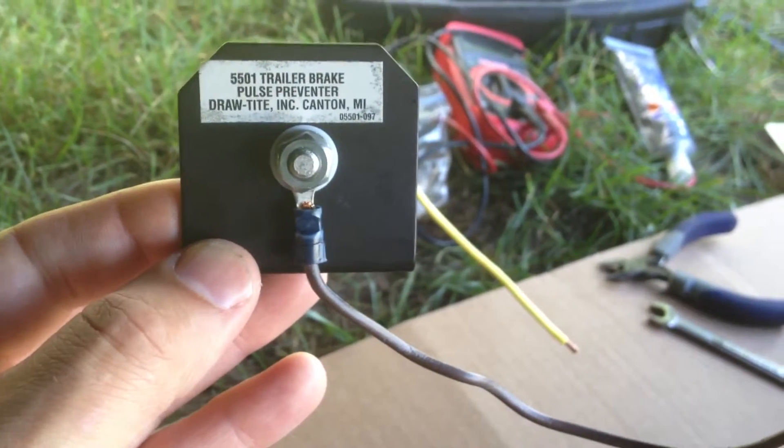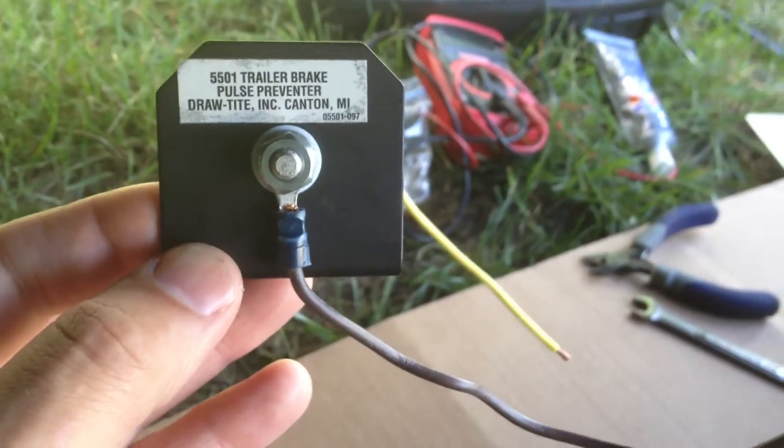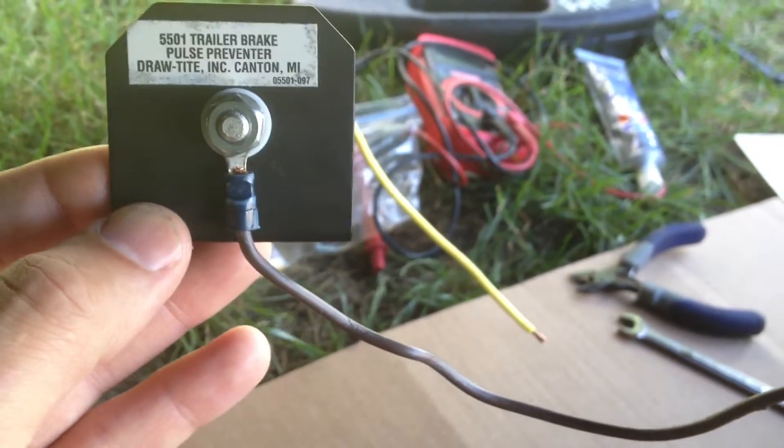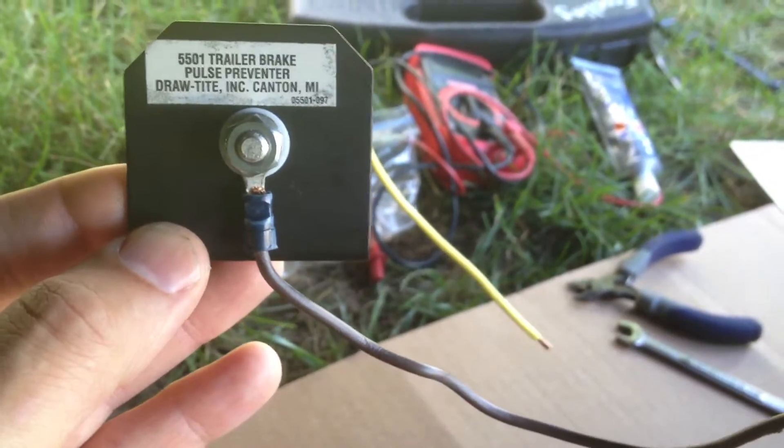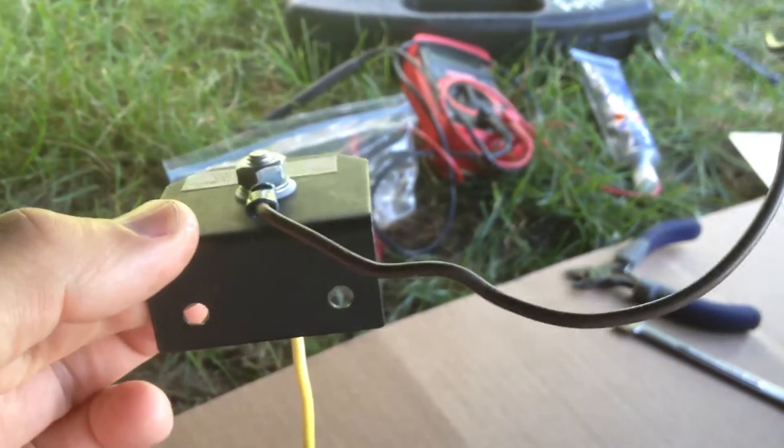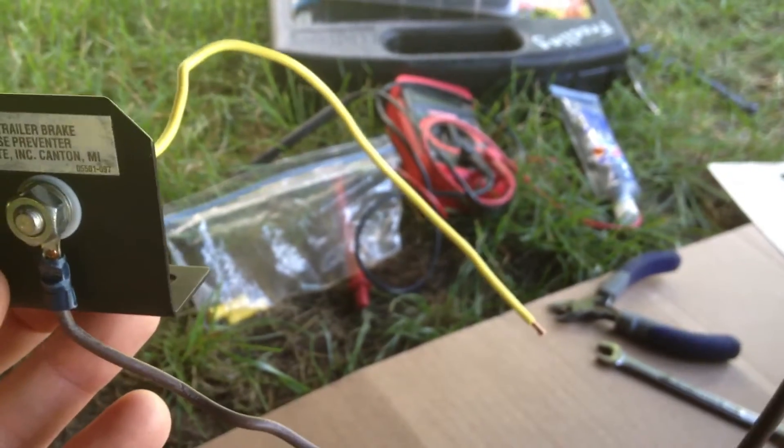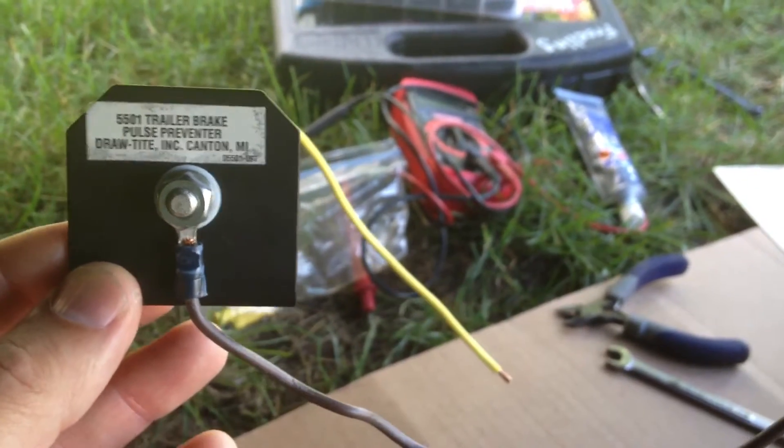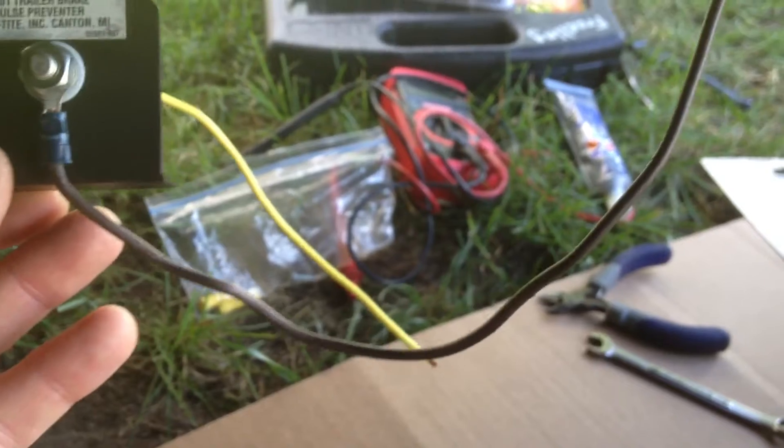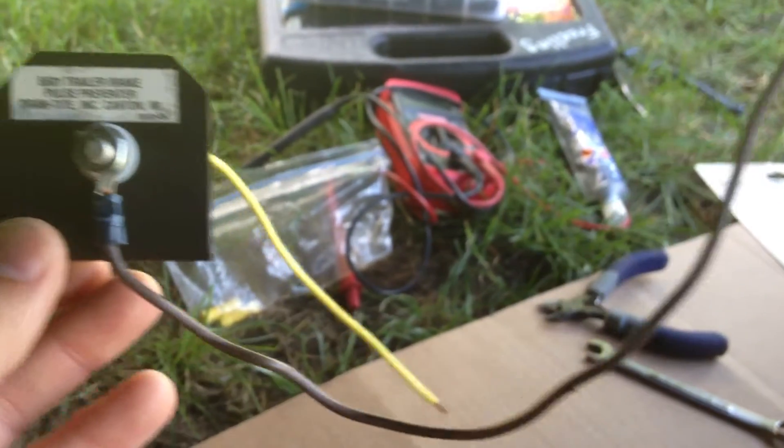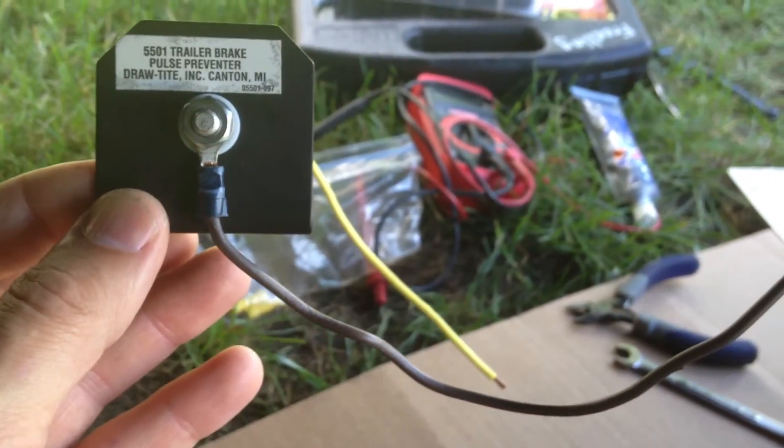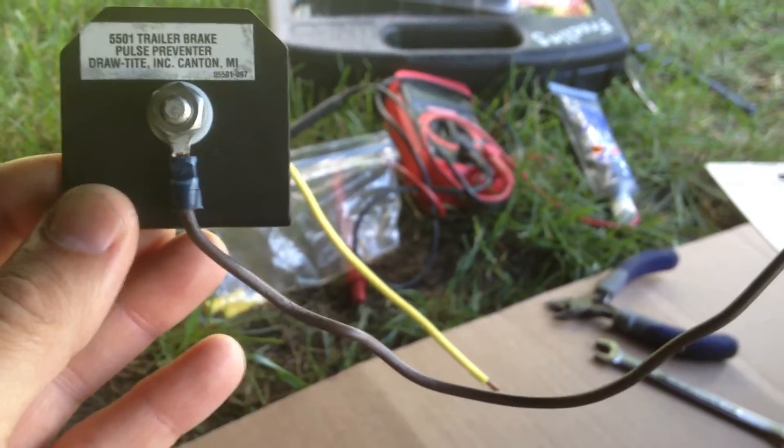We're using the 5501 trailer brake pulse preventer from DrawTite. There's some wood right above our pressure switch we're going to screw the bracket into. The yellow wire, we're going to solder a ring terminal on. It's going to go on to the brake pressure switch. And the brown wire is going to get soldered to the wires going back to the brake lights.